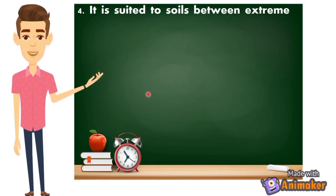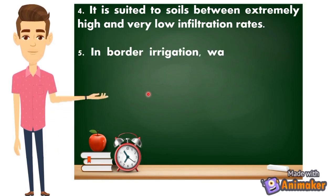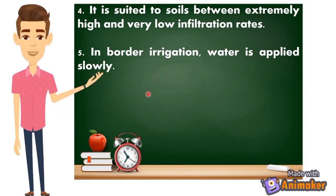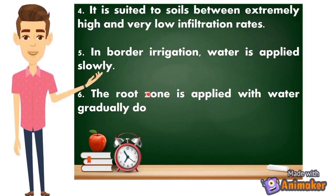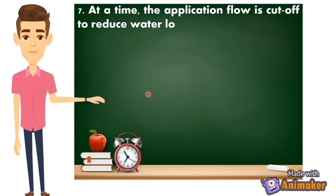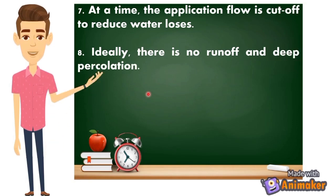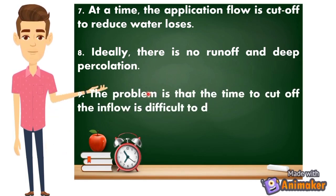Border irrigation is suited to soils with infiltration rates between extremely high and very low. Water is applied slowly so that the root zone is irrigated gradually down the field. At a certain time the application flow is cut off to reduce water losses — yung butas mismo na ginawa natin ay tatakpan para hindi masayang yung water. Ideally there is no runoff and deep percolation, though the problem is that the time to cut off the inflow is difficult to determine.